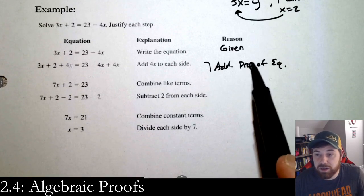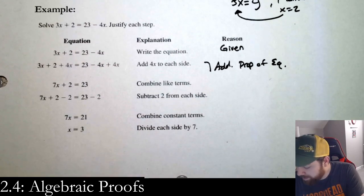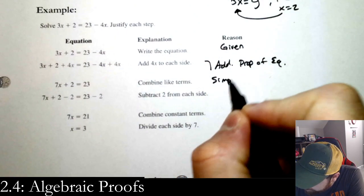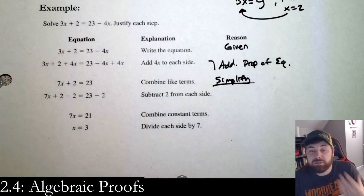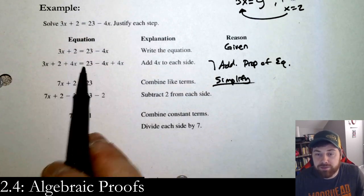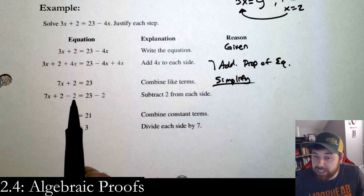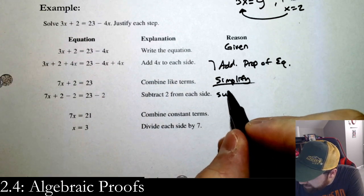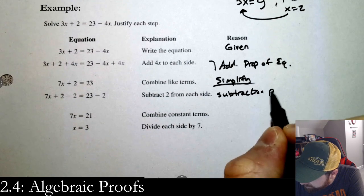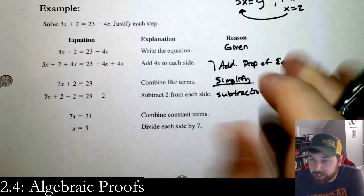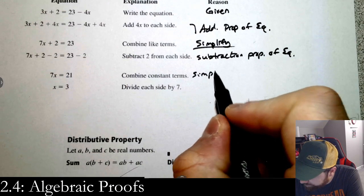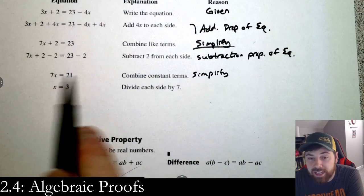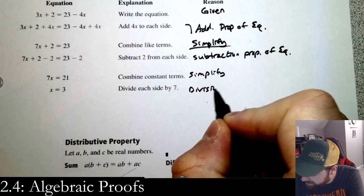Combine like terms — that's just simplification. I'll have you write 'combine like terms' — you're actually adding 3x and 4x. From here, we subtracted the same thing from both sides, so the reason is the subtraction property of equality. Combine like terms again to simplify. Then we divide the same thing on both sides, so that's the division property of equality.